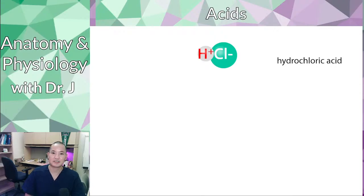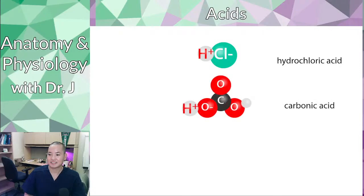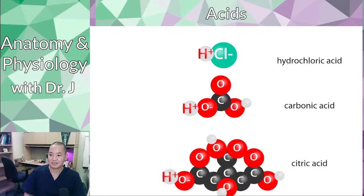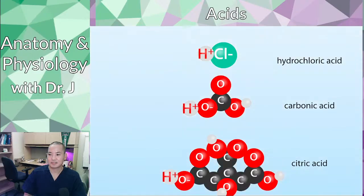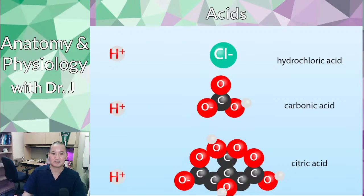Acids: hydrochloric acid has the chemical formula HCl, carbonic acid contains carbon, oxygen, and hydrogen, and citric acid is more complex — but these are all types of acids. When you dissolve them in water, these hydrogen ions pop off the original structure, releasing protons into the solution.